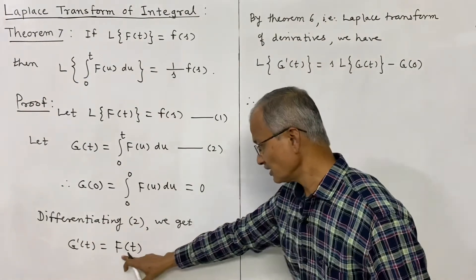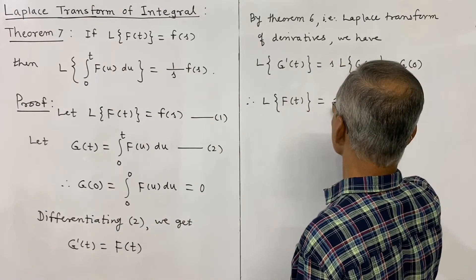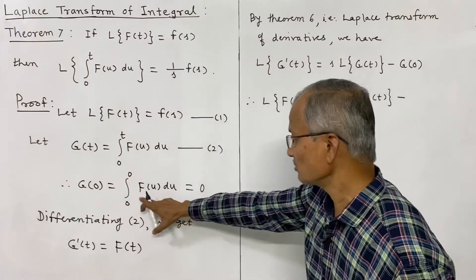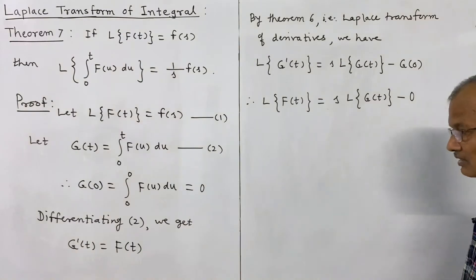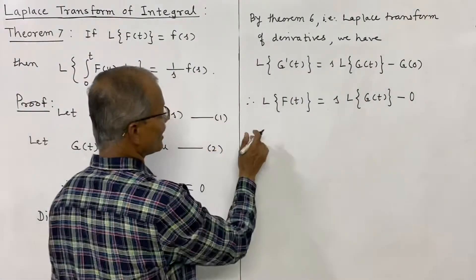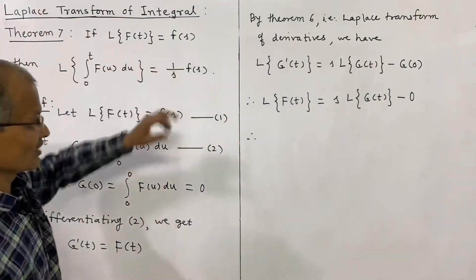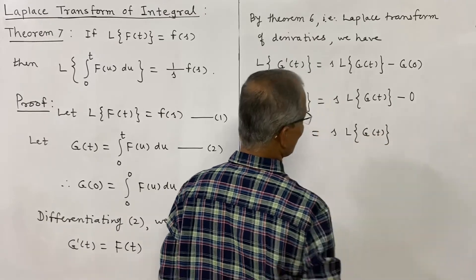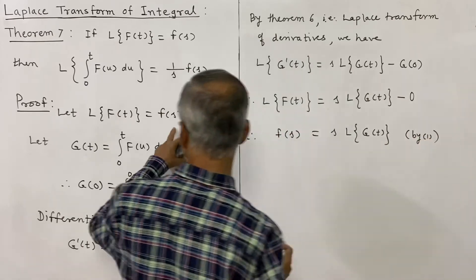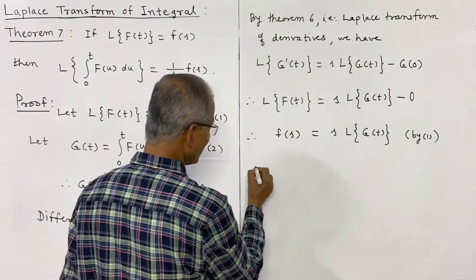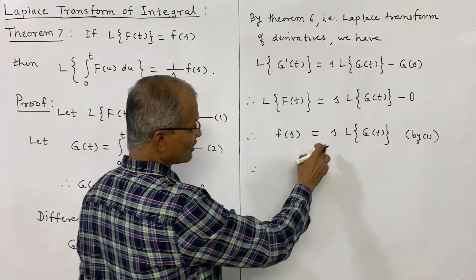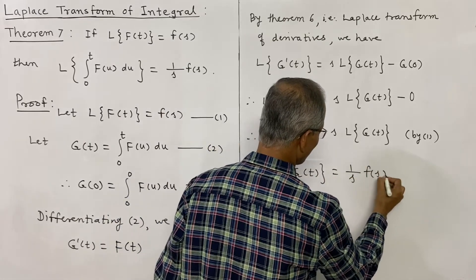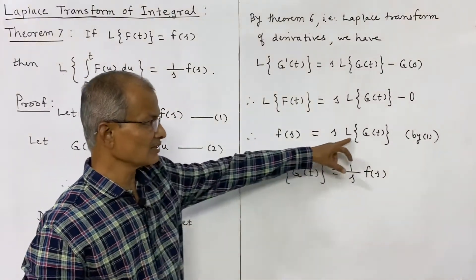Now g'(t) = F(t), so L{F(t)} = s·L{g(t)} - g(0). Since g(0) = 0, this becomes L{F(t)} = s·L{g(t)}. But L{F(t)} is f(s), so f(s) = s·L{g(t)}. Dividing both sides by s, and interchanging sides, L{g(t)} = (1/s)·f(s).